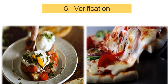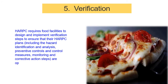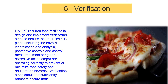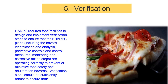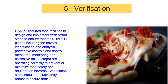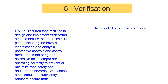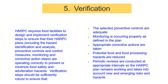Step 5: Verification. HARPC requires food facilities to design and implement verification steps to ensure that their HARPC plans — including hazard identification and analysis, preventive controls and control measures, monitoring, and corrective action steps — are operating correctly to prevent or minimize food safety and adulteration hazards. Verification steps should be sufficiently robust to ensure that selected preventive controls are adequate, monitoring is occurring properly, and appropriate corrective actions are taken. Periodic reviews are conducted at appropriate intervals so that the HARPC plan remains effective and takes into account new and emerging risks and hazards.